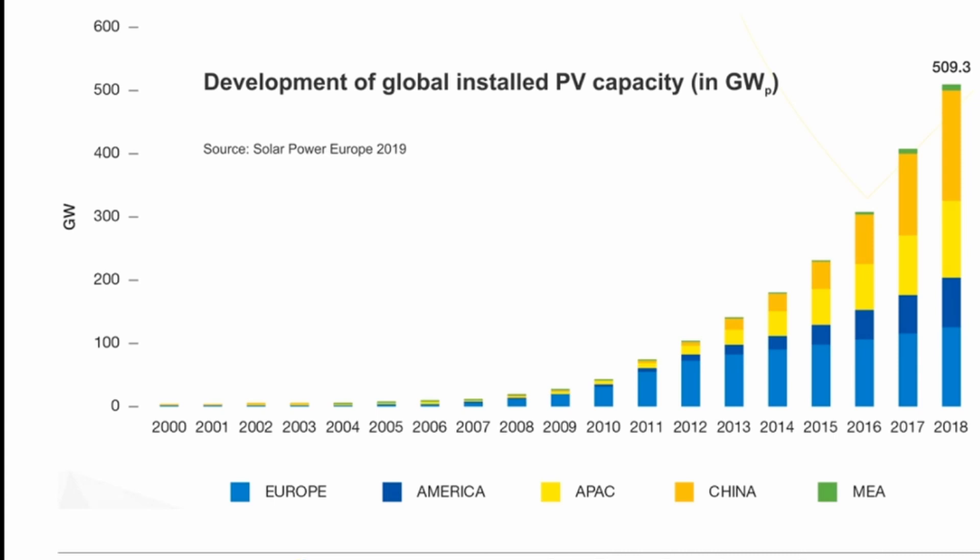The next part of part one is to calculate the year when the global energy demand can be fully supplied via photovoltaics. As you know from the first lecture, we need about 18 terawatt under standard test conditions. We now know the annual growth rate is 31.1%. The installed PV capacity at end of 2018 is 509 GW or 0.5 TW.